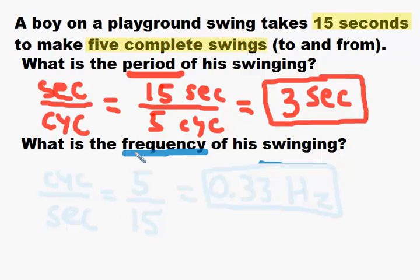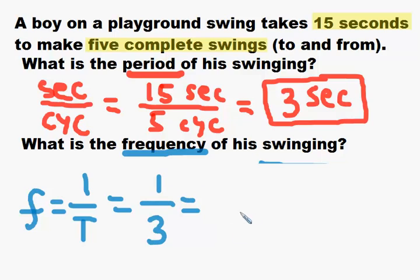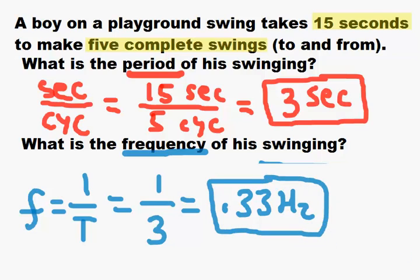There's another way we could have gotten frequency by using the equation: frequency equals one over the period. We already have the period — it's three seconds — so that's going to be one over three, which is a third. You get the same answer: 0.33 hertz. Whenever we give you the period, you can get the frequency from it, and if we give you the frequency, you can do the same thing to get the period.